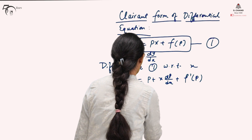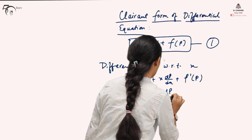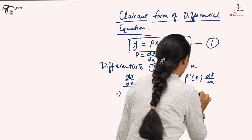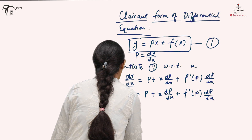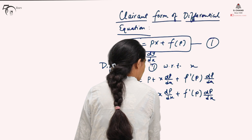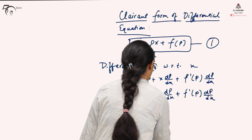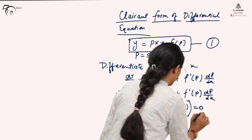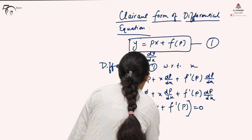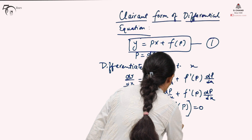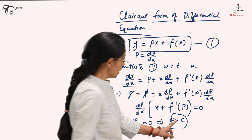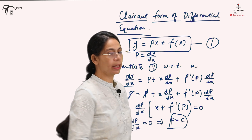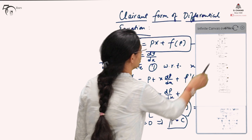Since dy/dx can be written as p, this becomes p equals p plus x·dp/dx plus f'(p)·dp/dx. The p cancels on both sides, and taking dp/dx as common, we get (x plus f'(p))·dp/dx equals 0, which gives dp/dx equals 0. Therefore, p can be written as a constant c. Substituting p equals c in equation one gives the solution.